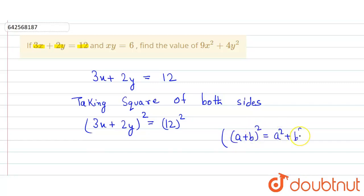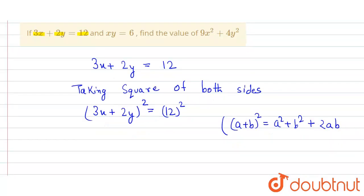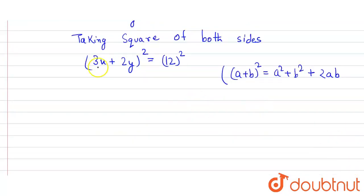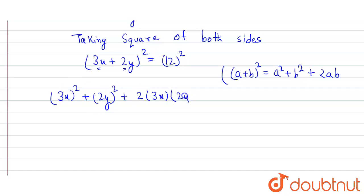Here we use the algebraic identity: a plus b whole square is equal to a squared plus b squared plus 2ab. Here 3x is a and 2y is b, so we get 3x squared plus 2y squared plus 2 into 3x into 2y is equal to 12 into 12, which is 144. On the left hand side, 3 squared is 9, so we get 9x squared plus 4y squared.